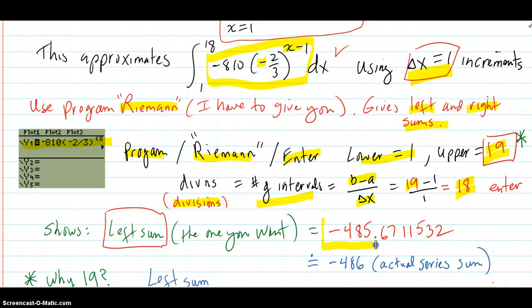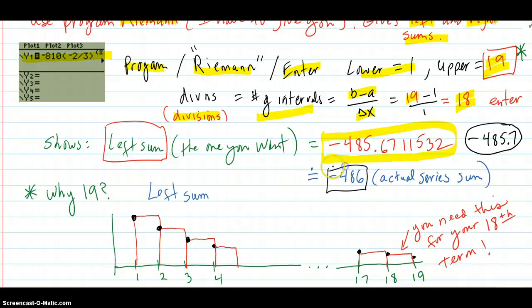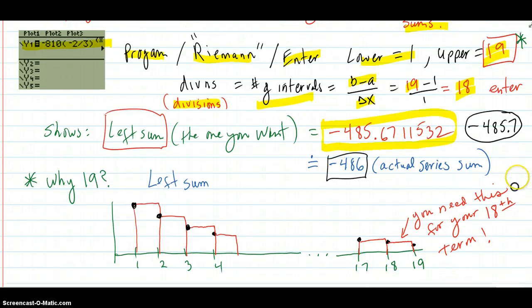The left sum is the one you want, which is exactly what we got before because we had negative 485.7 for that sum of the first 18. And you can see that that's right on with the approximation. And the actual series sum was negative 486. So why is this 19? What's that business going on?